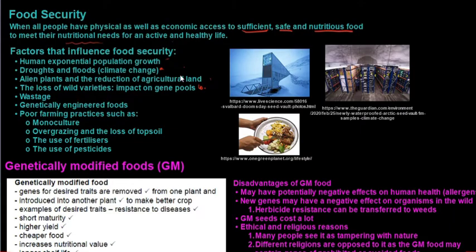Selective breeding involves the inbreeding of organisms with desirable characteristics. Both selective breeding and genetic engineering reduce the gene pool of species. Over time, a smaller gene pool might lead to weaker plants or animals that cannot respond to diseases and environmental changes, which can lead to crop failure or livestock loss, reducing the amount of food available.